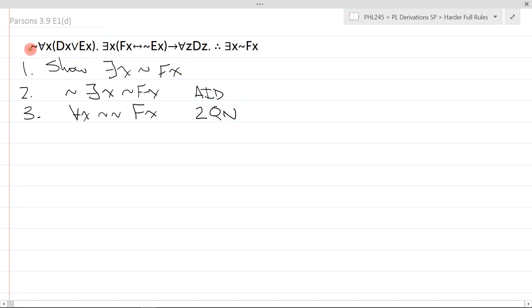Now I look at my premises. The first one is the negation of a universal. The second one is a conditional. And that's it. So I'll take care of this first. Why? Because a negation of a universal is an automatic move.